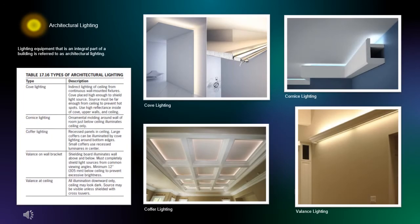Lighting equipment that is an integral part of a building is referred to as architectural lighting. Cove lighting is indirect lighting of the ceiling from continuous wall-mounted fixtures. Cornice lighting consists of ornamental moldings around the wall of a room just below the ceiling, which illuminates the ceiling only. Coffer lighting refers to large recessed panels in the ceiling which are illuminated. Valanced lighting illuminates the wall above and below.